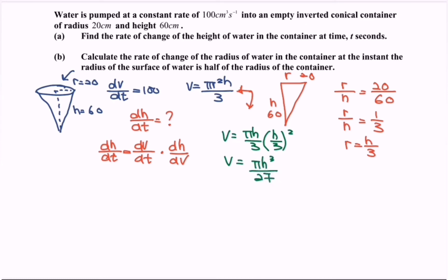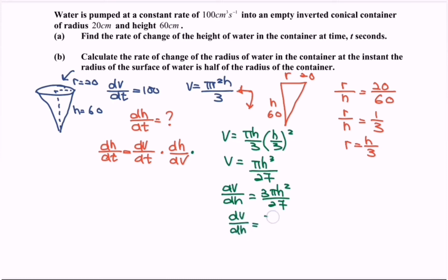We have now expressed V in terms of h. Next, find dV/dh: dV/dh = 3πh² / 27, which simplifies to dV/dh = πh² / 9.